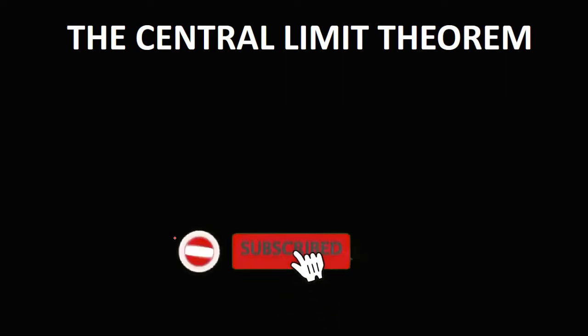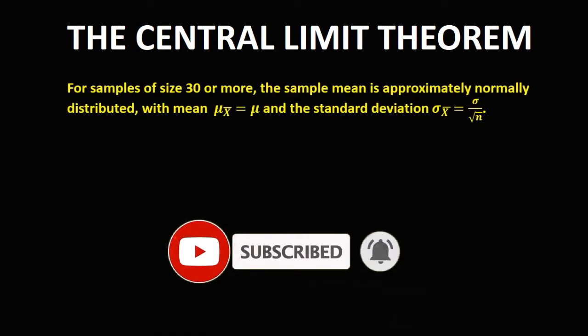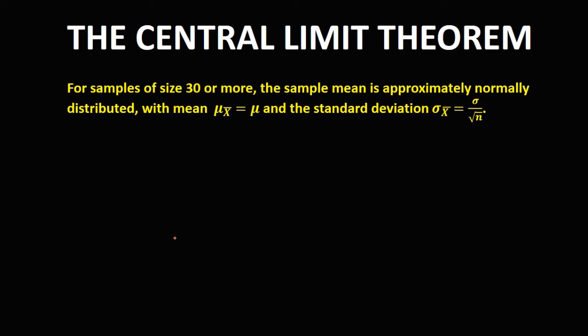Let's have this topic: the Central Limit Theorem. For samples of size 30 or more, the sample mean is approximately normally distributed, with the sampling mean equal to the population mean and the sample standard deviation equal to the population standard deviation over the square root of the sample size.